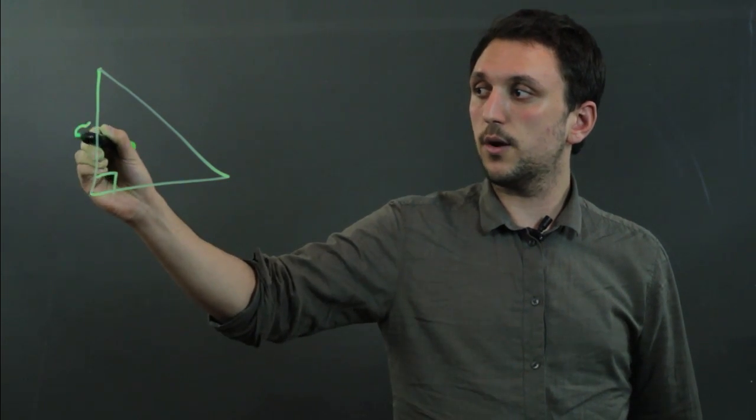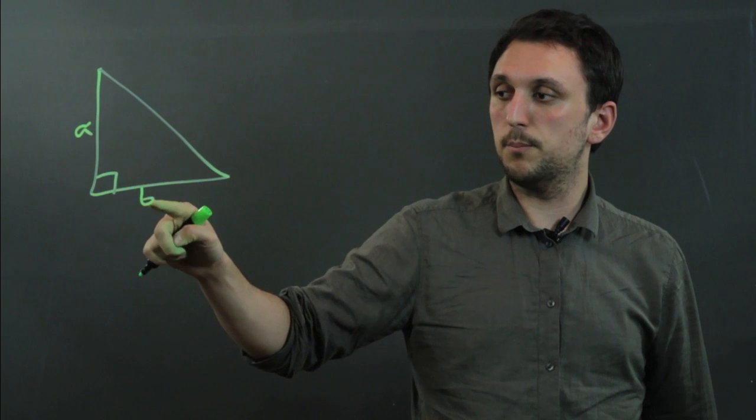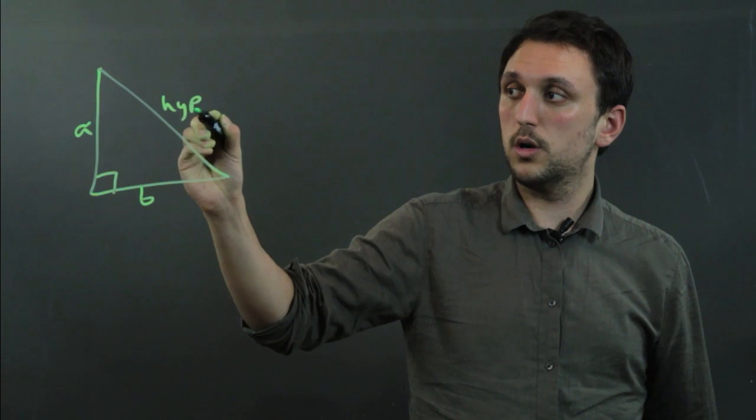So another thing is that this side length here, A, and this side length here, B, and if we call this the hypotenuse, or C,